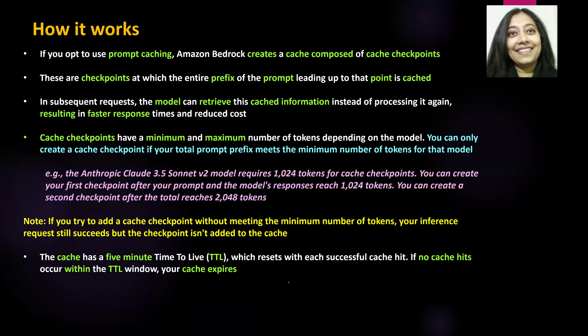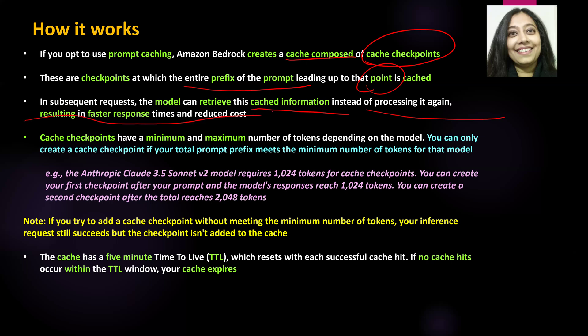Now let us see how prompt caching works. If you opt to use prompt caching — remember, it's an optional feature — Amazon Bedrock creates a cache composed of cached checkpoints. These checkpoints are used so that an entire prefix of the prompt leading up to that point is cached. We do this so that subsequent requests allow the model to retrieve this cached information instead of processing the prompt again, resulting in a faster response to the user at a reduced cost.